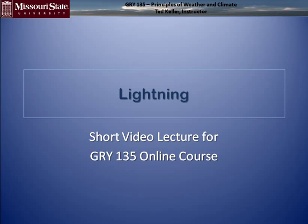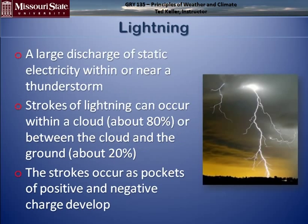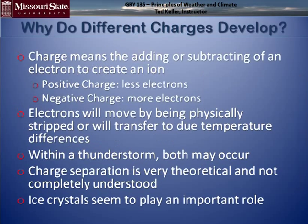Lightning is a large static electricity show in a thunderstorm. 80% of lightning is in cloud, 20% hits the ground. That's one-fifth of the lightning that we're really concerned about, and it occurs because we have positive and negative areas of charge in a storm.